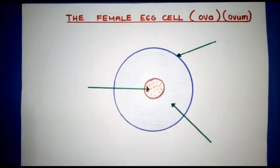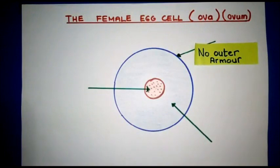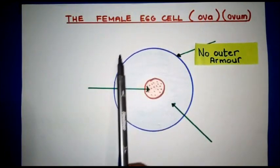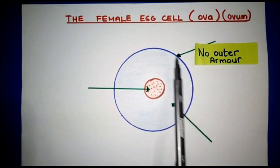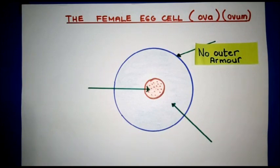As you can see, I've actually taken that top layer away and there are three focus areas that we're all going to look at. The first thing to notice, ladies and gentlemen, if you compare it to the sperm cell, you will find that there is absolutely no outer armor. The female egg does not have this outer armor on the inside to protect whatever is found inside.